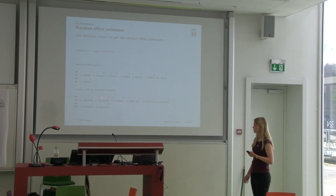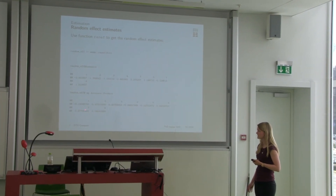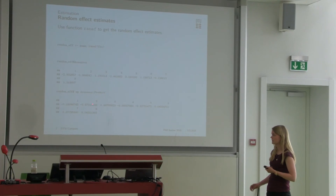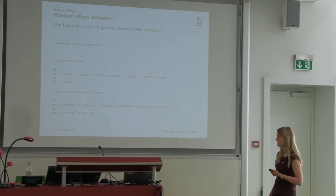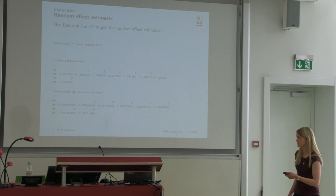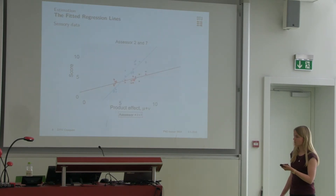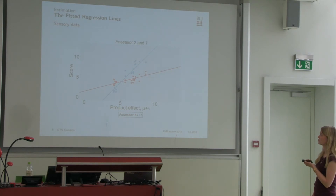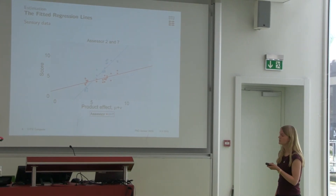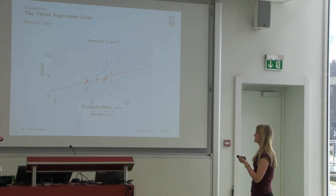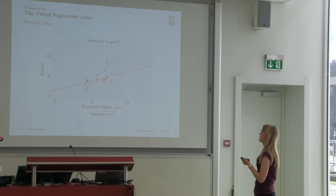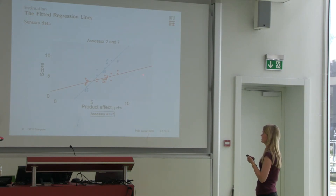Before I showed you the scores given by assessor 2 and assessor 7, and we saw that assessor 2 uses a very small part of the scale, which is why this assessor has a small and negative regression coefficient. And assessor 7 has a large one instead. I have plotted the scores for assessors 2 and 7 again with the fitted regression lines, and as expected, because assessor 7 is using a big part of the scale, he or she will also have a steep regression line compared to assessor 2.